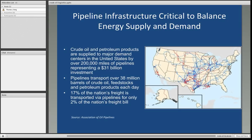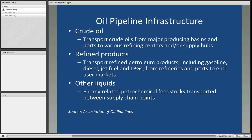As you can see, this is a simplified map of the pipeline infrastructure in the United States. It is critical to balance the energy supply and demand. Crude oil and petroleum products are supplied to major demand centers by over 200,000 miles of pipelines, representing approximately $31 billion in investment. Pipelines transport over 38 million barrels of crude oil, feedstocks, and petroleum products each day. 17% of the nation's freight is transported via pipelines for only about 2% of the nation's cost for such freight.